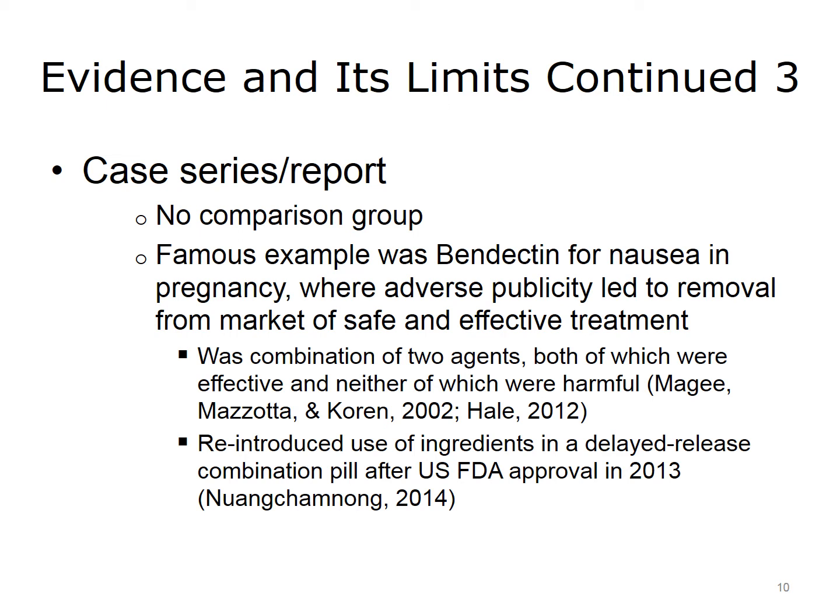A classic example of poor evidence resulting from a case series is the drug Bendectin, which came out in the 1980s as a treatment for nausea in pregnancy. We should always be careful about giving any medication to pregnant women, but it turns out that Bendectin was unfairly singled out. The adverse publicity was so strong that it was taken off the market. Bendectin was a combination of two agents, both of which were known to be effective and neither of which had any harmful effects. But because there was a case series of birth defects, Bendectin was taken off the market.